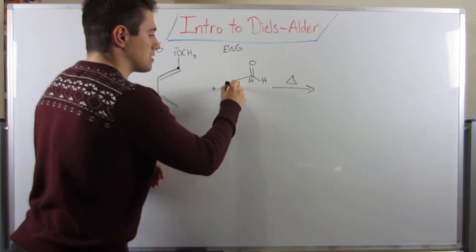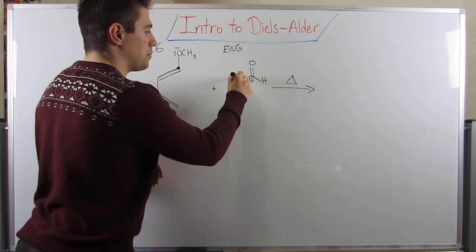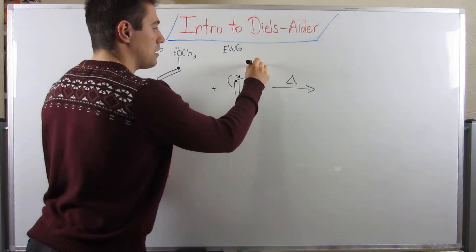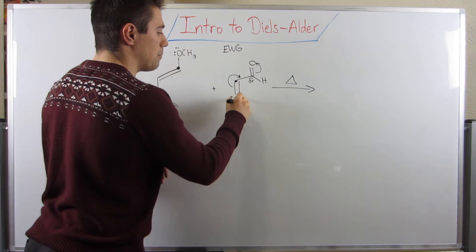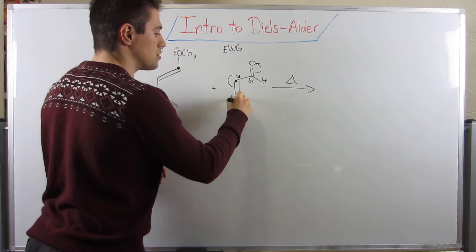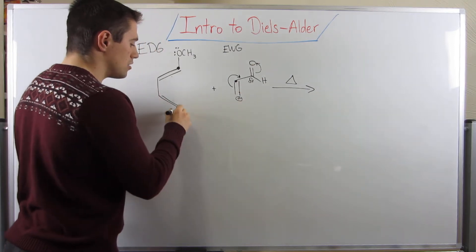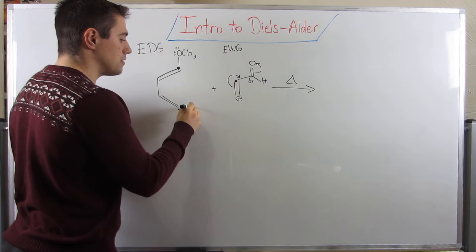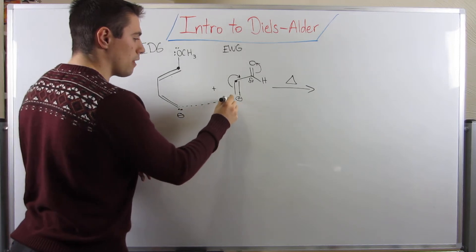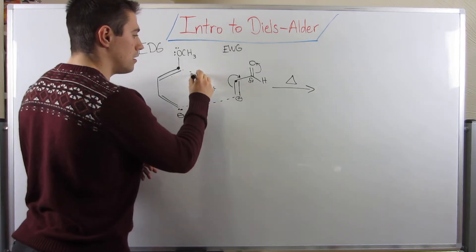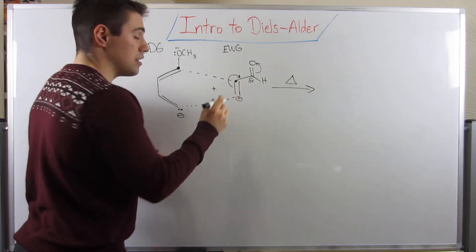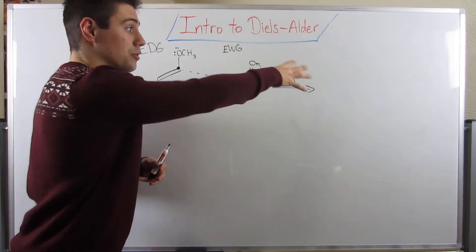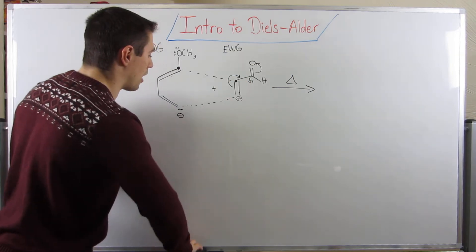We would take these electrons and swing them up here, and kick these electrons up here, putting a positive charge down there. You saw there was a negative charge here, and these guys would match up in the formation of our ring, our cyclo product.